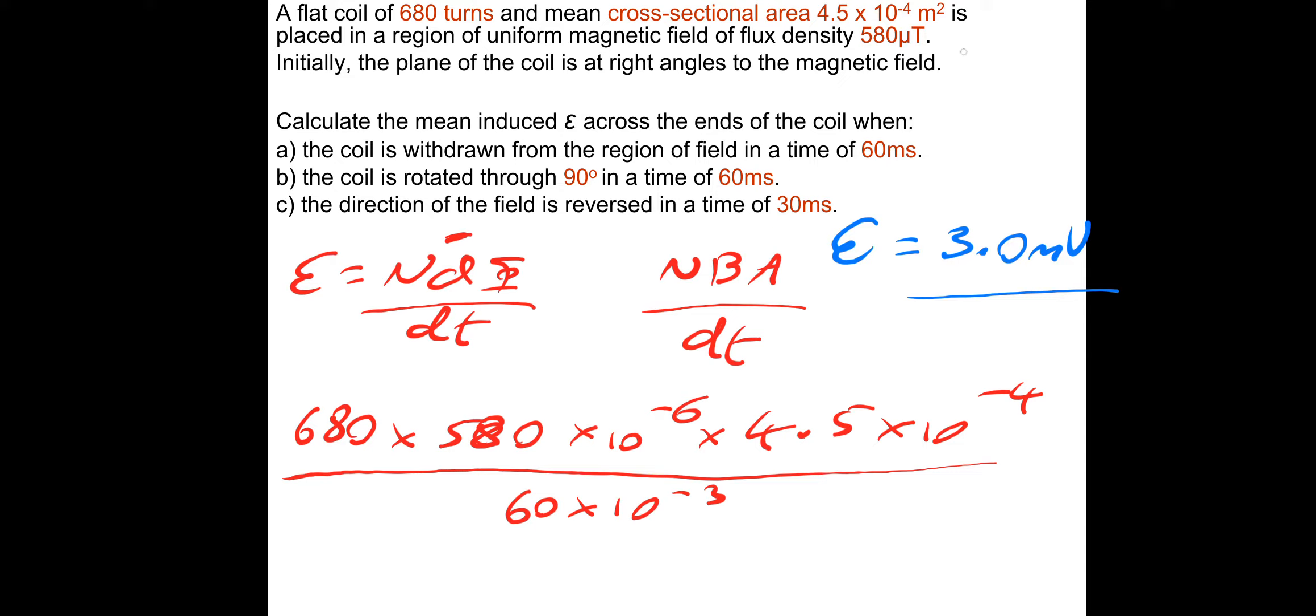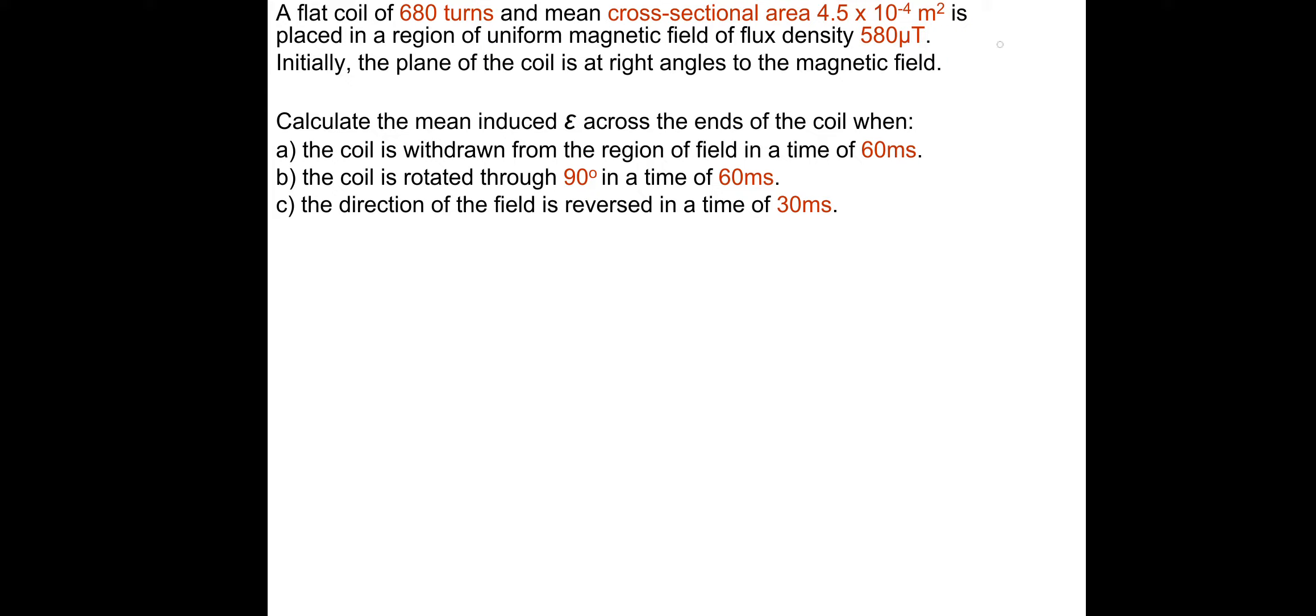Part B then. The coil is rotated through 90 degrees. So this is the exact same answer. So the EMF is 3 millivolts. And the reason why is because initially the coil, the plane of the coil is at a right angle or perpendicular to the magnetic field, so it would be a maximum flux. And if it rotates through 90 degrees, after a 90-degree turn, the plane of the coil would be parallel to the magnetic field. So again, we've got the exact same scenario as we're drawing from the field. It would be the NBA minus the flux after a 90-degree turn, which would be zero, divided by the change in time, which would give us the exact same answer as the first question. Hopefully that went okay.